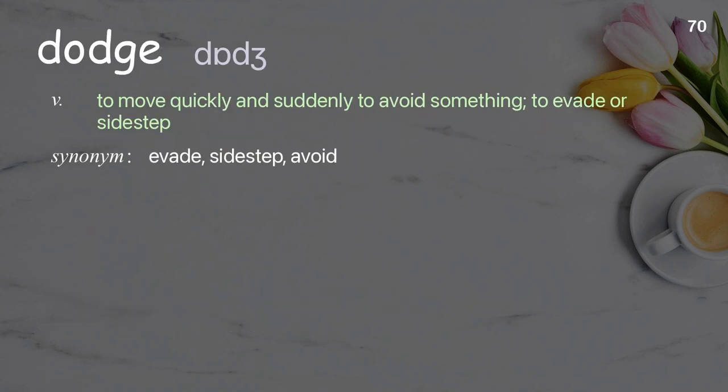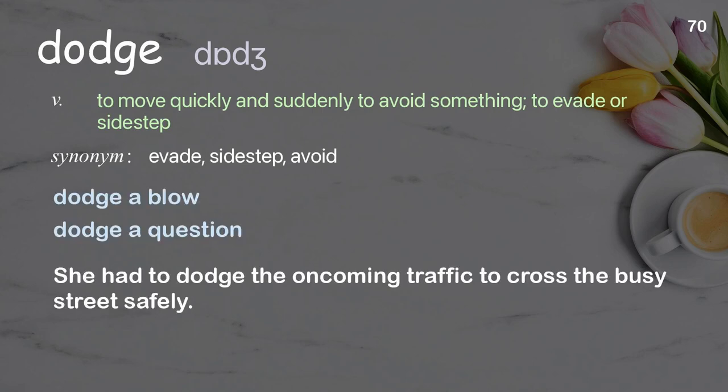Dodge: To move quickly and suddenly to avoid something; to evade or sidestep. Examples: dodge a blow, dodge a question. She had to dodge the oncoming traffic to cross the busy street safely.